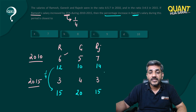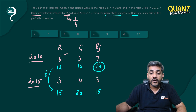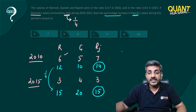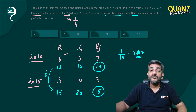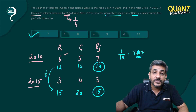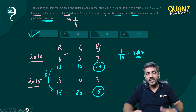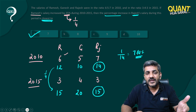The question asks for the percentage increase in Rajesh's salary. Rajesh's salary was 14 and is now 15 — it has increased by 1 on 14, which is 7.14 percent. So the answer is closest to option A.